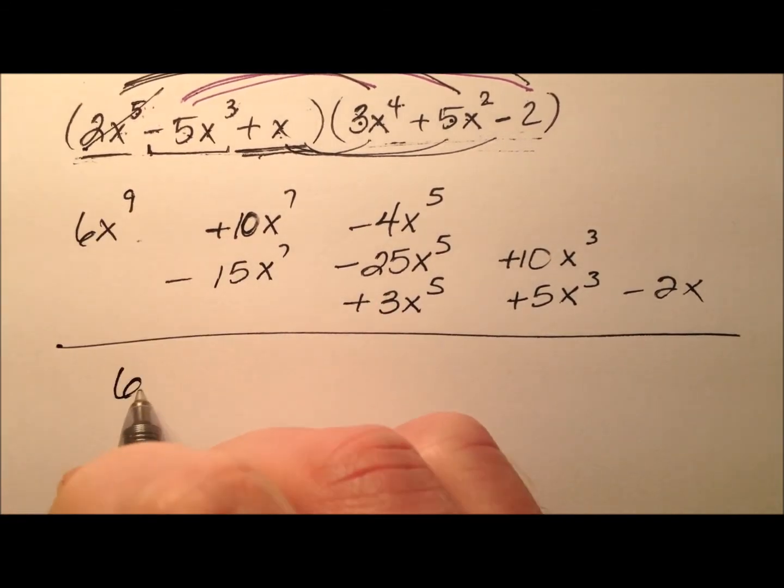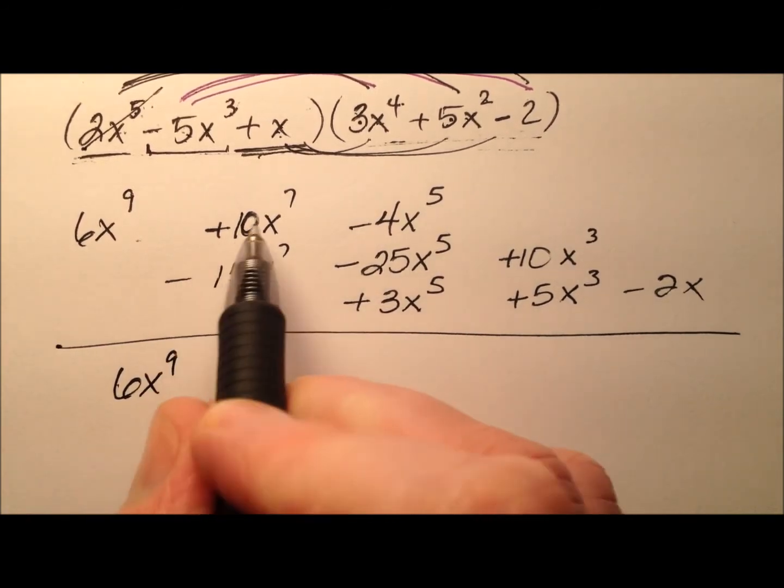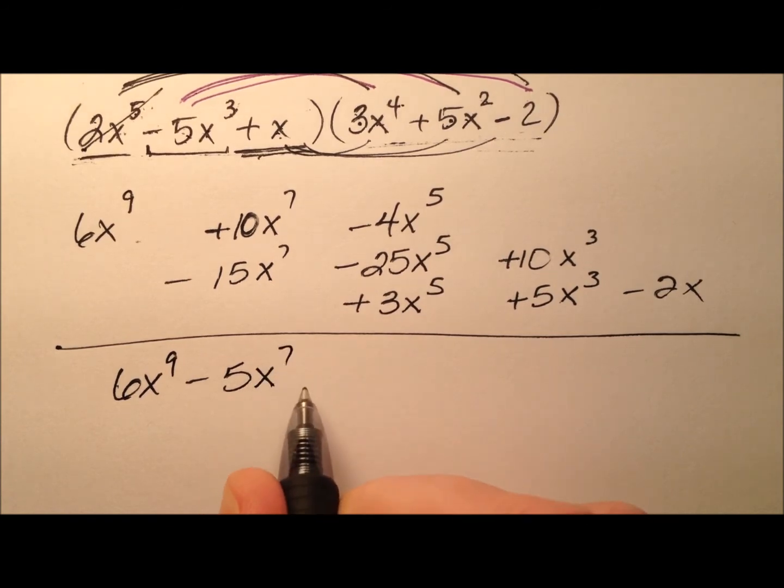Okay, so this guy is going to be x to the ninth with a 6 in front, and then we have minus 5x to the seventh,